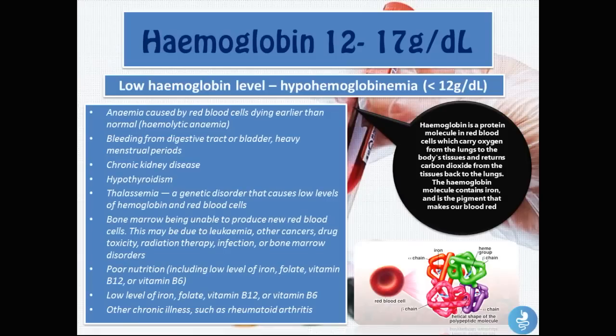The third test is the hemoglobin test. The normal hemoglobin level is 12 to 17 grams per deciliter. Hemoglobin is a protein molecule in the red blood cells that carries oxygen from the lungs to the body's tissues and returns carbon dioxide from the tissues back to the lungs. The hemoglobin molecule contains iron and is the pigment that makes our blood red, as shown in the image of the hemoglobin molecule inside the red blood cell.